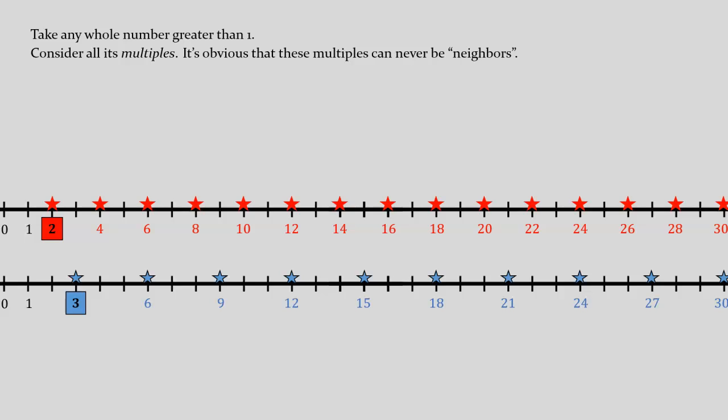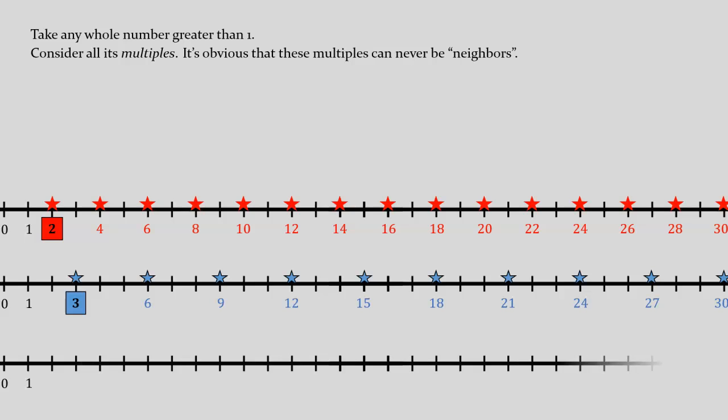The gaps between successive multiples of 3 are larger. And, of course, the gaps would be larger still if we were to look at multiples of 4, or 5, 6, 7, or whatever. I mention this obvious fact about gaps between multiples because we can draw a non-obvious conclusion from it.